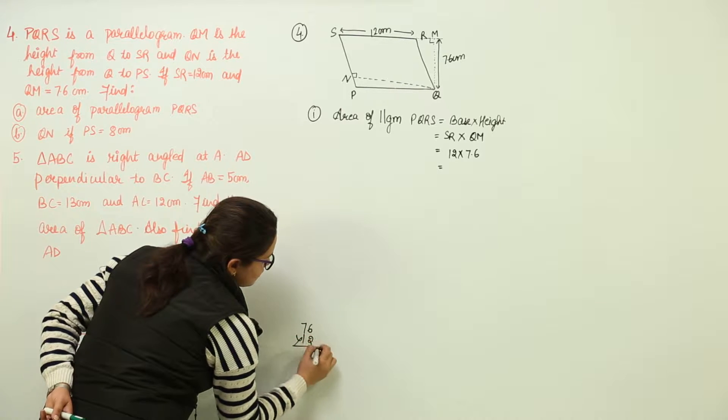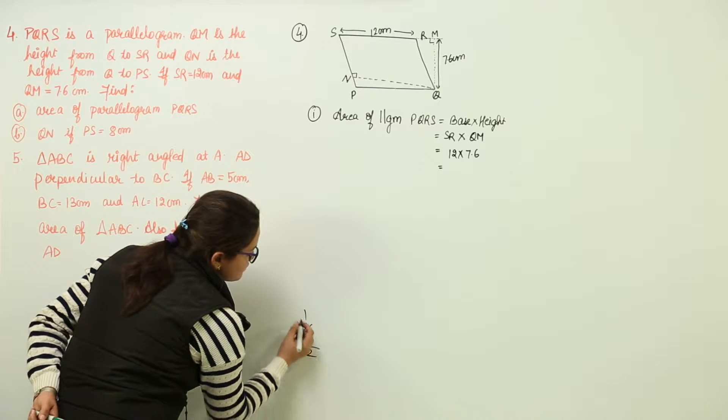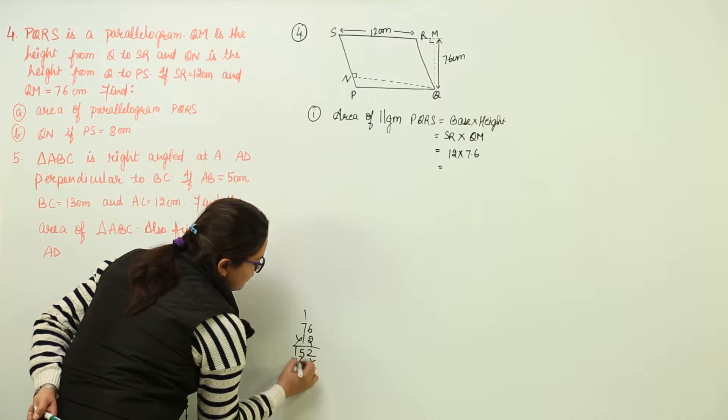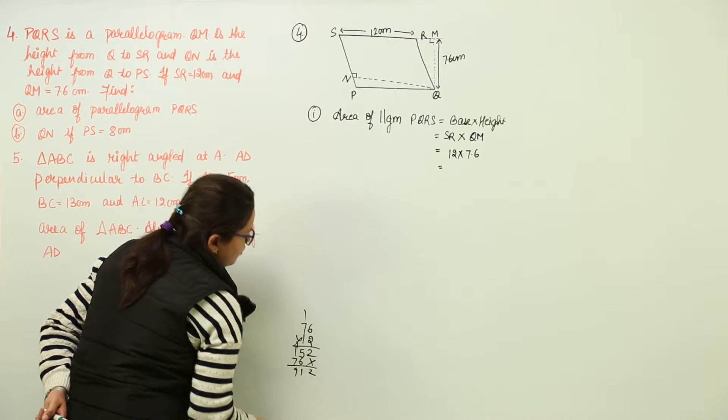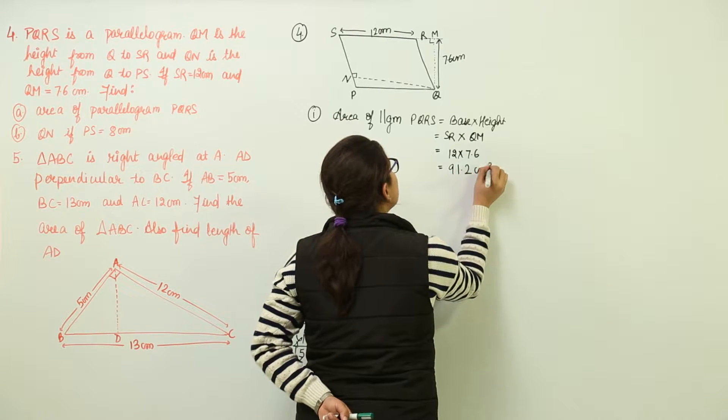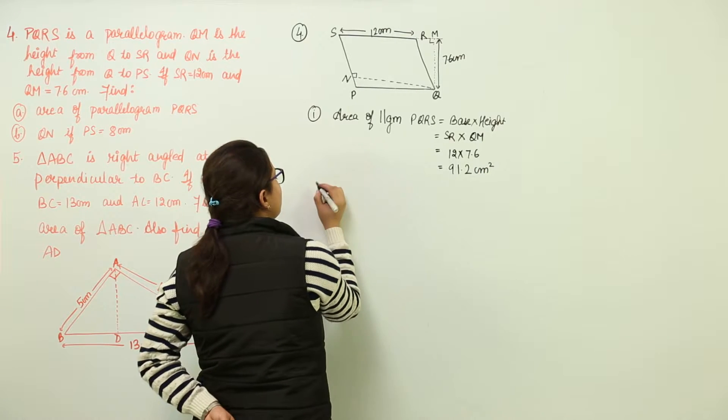76 into 12. 2, 6 is 12. 1, 2, 7 is 14 and 15. 6 and 7. 2, 11, 1, 7, 8, 9. We got 91.2 centimeters square as the area for this parallelogram.